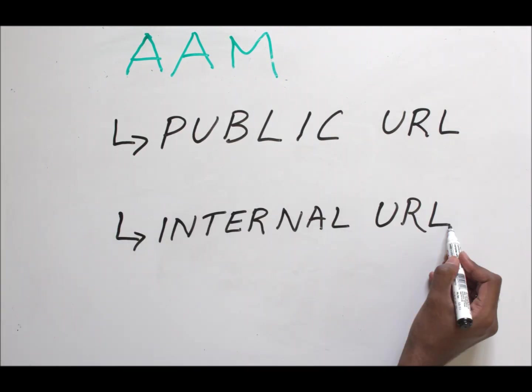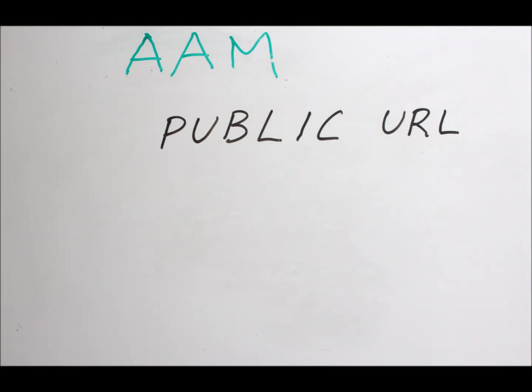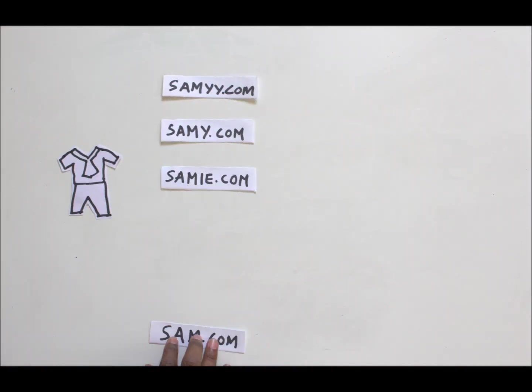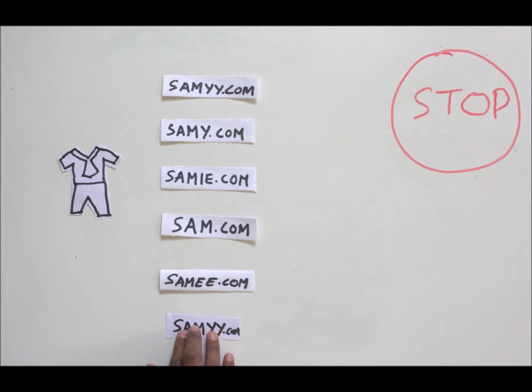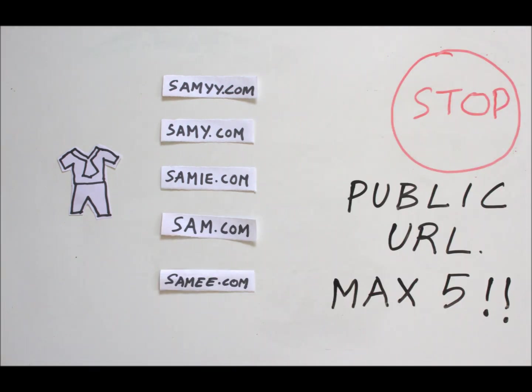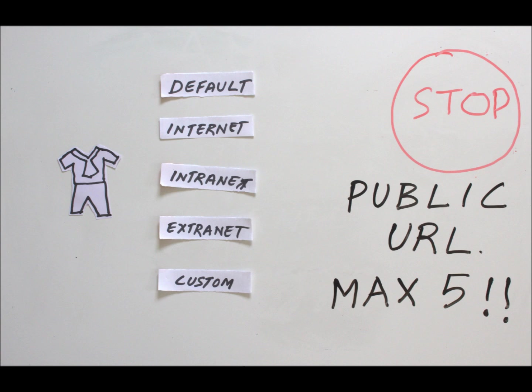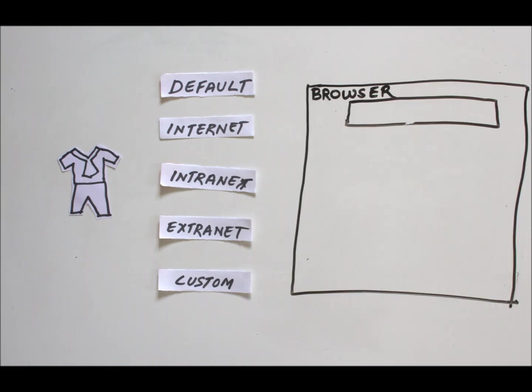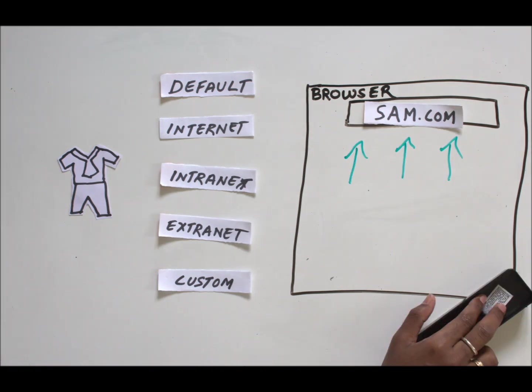Let's first talk about the public URL. The same site and the same content can be accessed using different URLs. Please note that a site can have only a maximum of five public URLs, each of which corresponds to a different zone. When you go ahead and type in a public URL in any of the browser, the URL stays as it is and does not change.